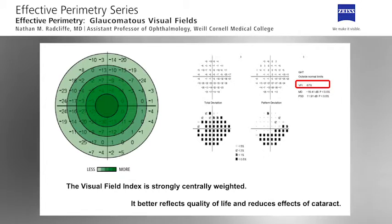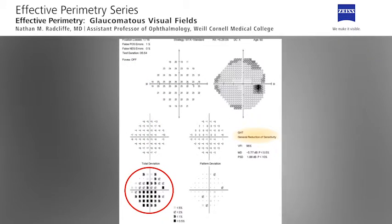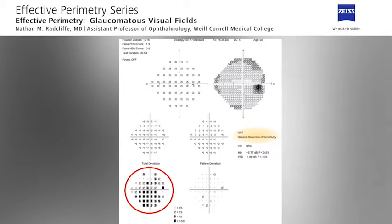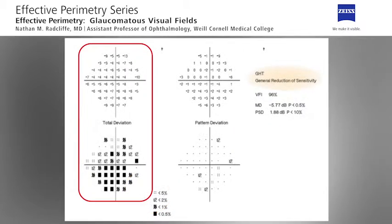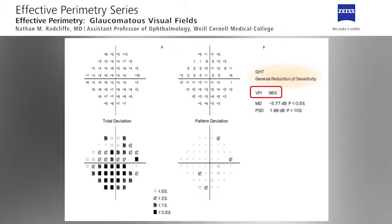With the Humphrey Field Analyzer, the Visual Field Index, or VFI, is always centrally weighted to take into account cataracts and to reduce their effect. Here we have a typical cataract pattern in a 92-year-old woman with ocular hypertension and best corrected visual acuity of 0.3 or 20/60. Total deviation values are considerably more negative than pattern deviation values and many more test points are significantly depressed. The GHT classification of general reduction of sensitivity is also typical of cataract. Notice that the VFI is 96% while the mean deviation is significantly depressed.